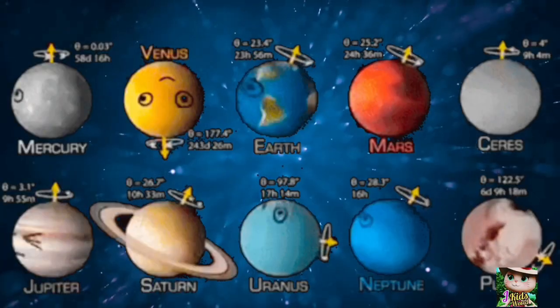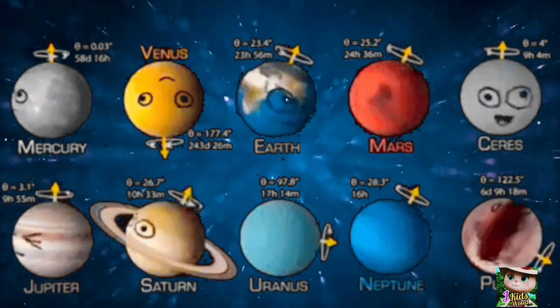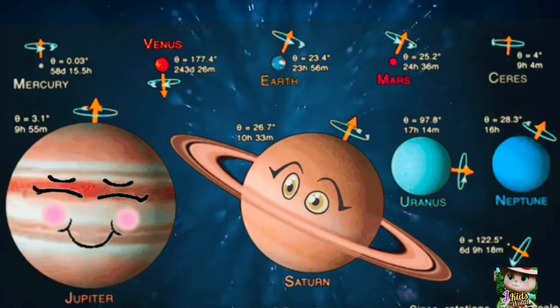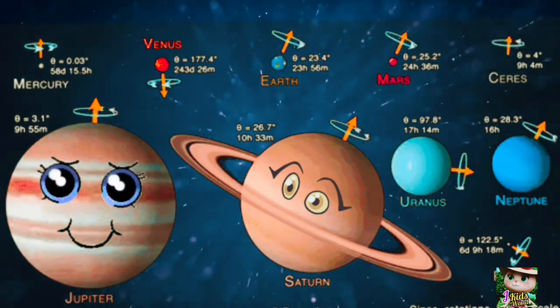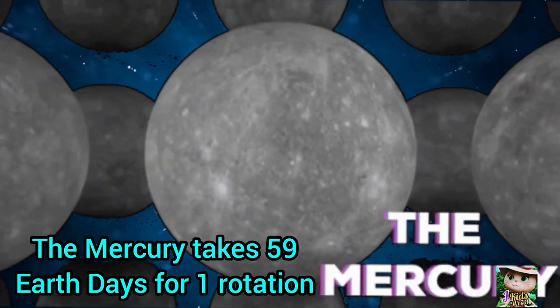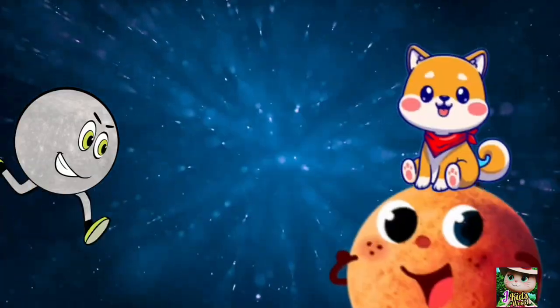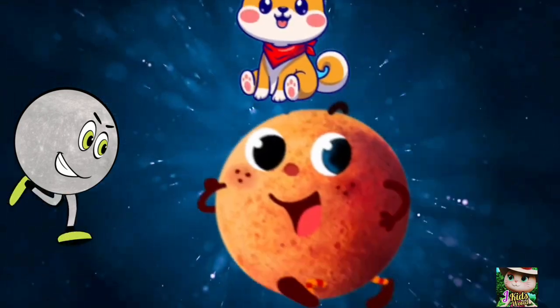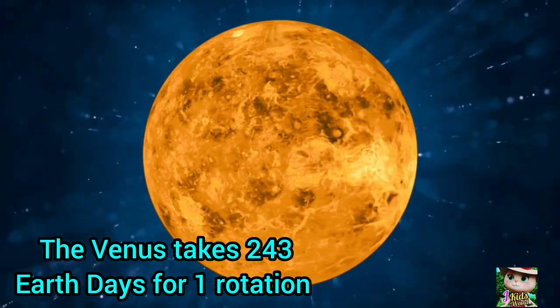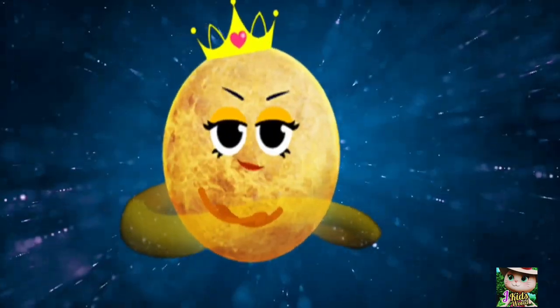Rotation times of planets: Mercury takes 59 days to complete one rotation. Venus takes 243 days to complete one rotation.